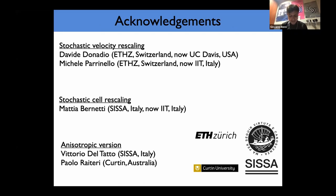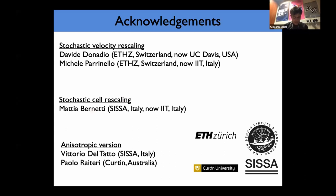To summarize the second part: I introduced barostats, and in particular stochastic cell rescaling — it's first-order, gives correct fluctuations, has one effective parameter (only the ratio beta_T / tau_P matters), allows you to define effective energy conservation, and can be generalized to crystalline solids. Finally, let me thank my collaborators. The work on thermostats was done when I was a postdoc in Michele Parrinello's group, with acknowledgment to David Donadio. The work on stochastic cell rescaling was done by former postdoc Mattia Bernetti, and the anisotropic version was developed by master student Vittorio del Tatto in collaboration with the group from ICTP.